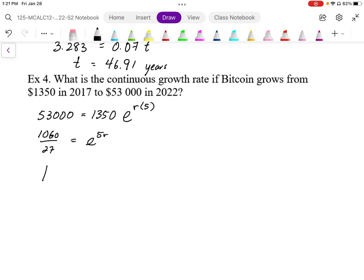That's e to the 5r. I want to solve the exponent. So I'm going to take the log. My argument is the answer to the exponent. And that's going to equal the exponent, 5r.